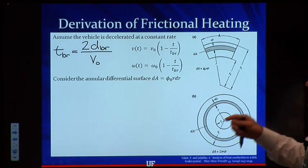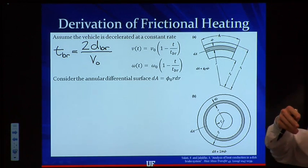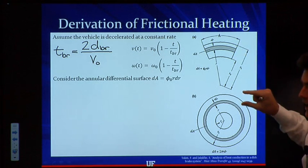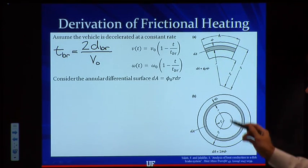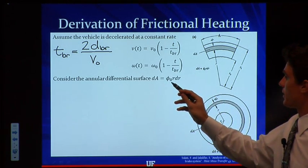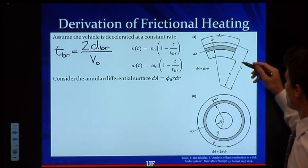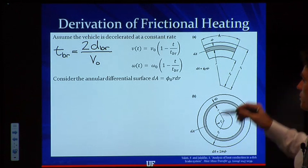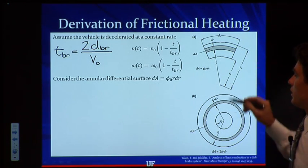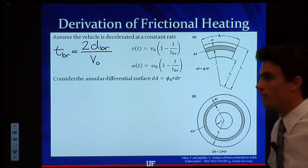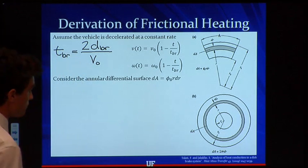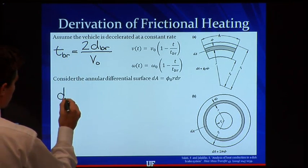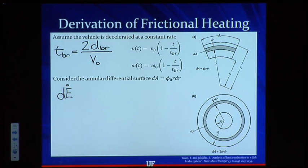Now, if we consider an annular differential surface, we want to find the amount of heat generated by the entire pad. So we're going to consider an annular differential area, shown here in gray. That dA has an area of φ₀ — where φ is the angle given by this annulus — times r, which is the radial position of the differential area, times dr, which is the thickness of the differential area. What we want to find is the differential amount of heat generated by the friction, and we're going to call that dĖ, the differential energy generation.